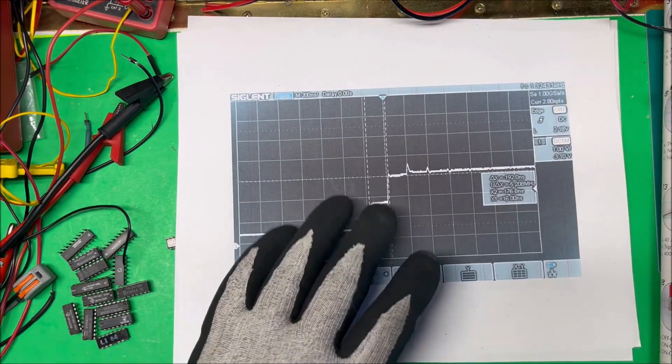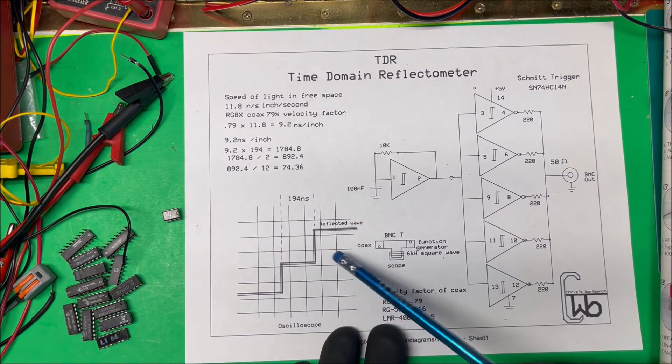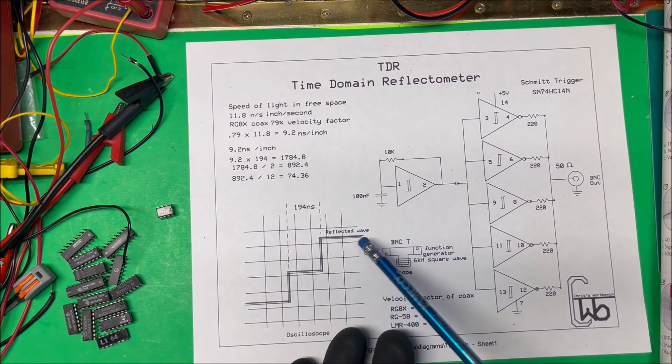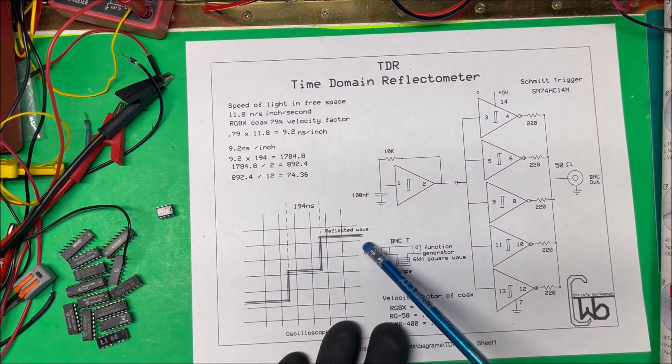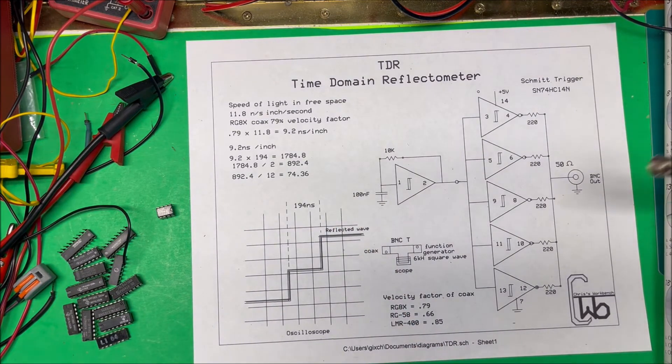So that's all there is to the TDR. We just send the signal down the line and we monitor the reflection coming back and we can tell the length of the cable. And if there happened to be a short or an open in the middle of the cable it would tell us the distance where it was at.